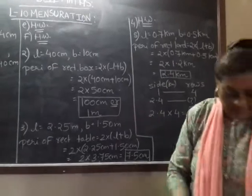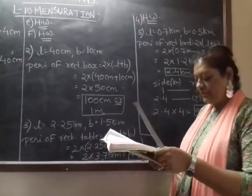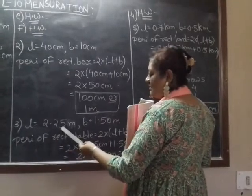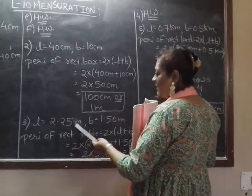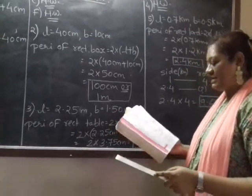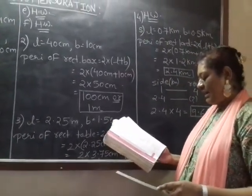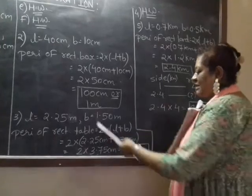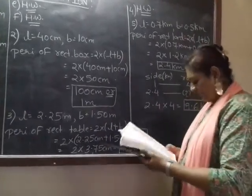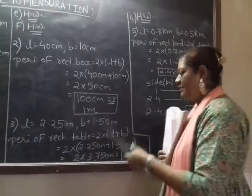Question number 3. A table top measures 2 meter 25 centimeter. So length will be 2 meter 25 centimeter. So 2.25 meter. When we remove the units and keep a decimal point, 1 meter by 1 meter 50 centimeter. So B is equal to 1.50 meter.